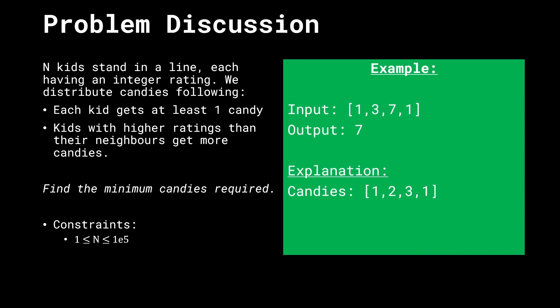Let's take an example to understand this better. When the input given to us is 1, 3, 7, 1, the output is 7. That's because the candies we can give them are 1, 2, 3, and 1 respectively.